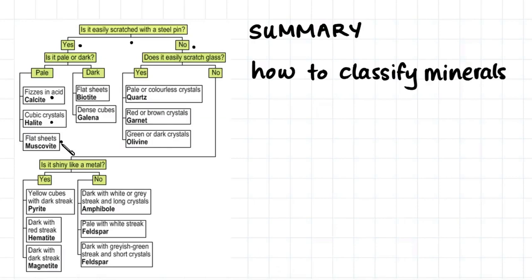But if the mineral is dark, then we would see whether the mineral will break off in flat sheets, and therefore we have a biotite mica. Or if we have dense cubes, we may have a galena. These two here are quite comparable because they are both micas. However, one is dark and one is light in colour.